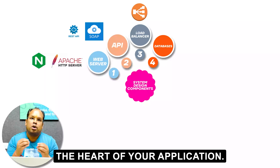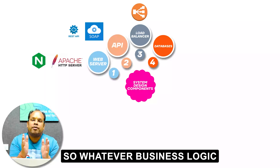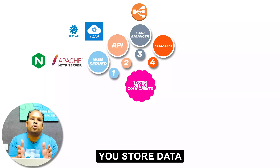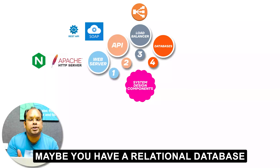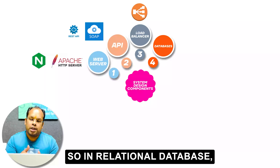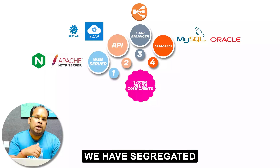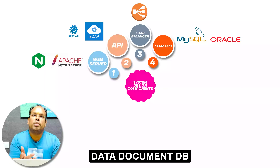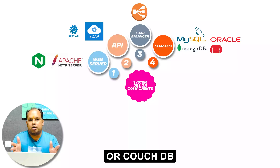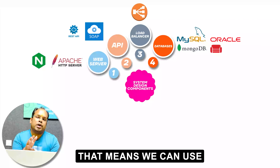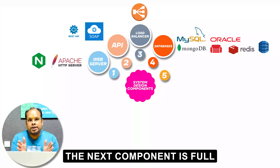Number four is the database — the heart of your application, the core of your app. Whatever business logic you've written in your API, you store data in some database. You might use a relational database or a NoSQL database. For relational databases, MySQL, Oracle, and Postgres are popular. For NoSQL, we have document databases like MongoDB or CouchDB, and key-value databases like Redis or Amazon DynamoDB.